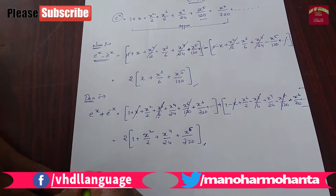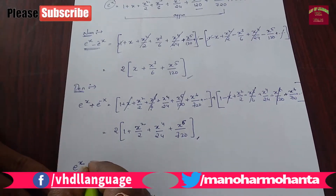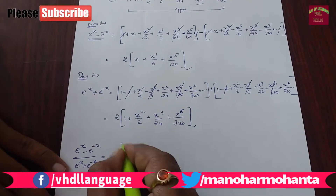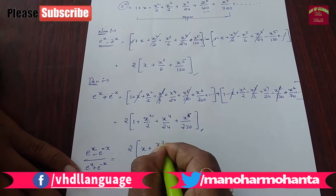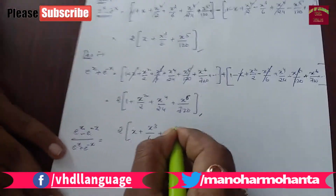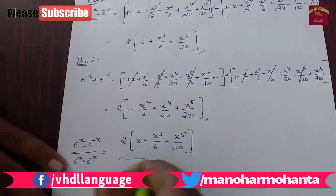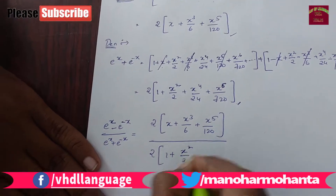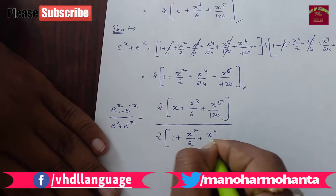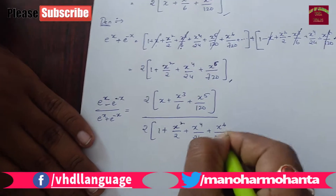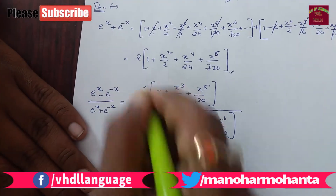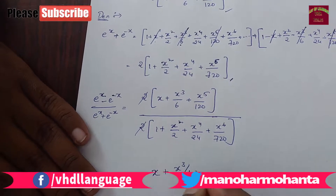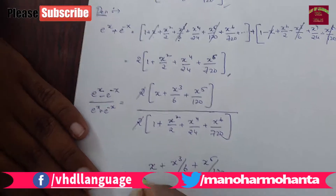Now this is numerator and denominator. If we expand it, e power x minus e power minus x divided by e power x plus e power minus x equals to: numerator 2x plus x power 3 by 6 plus x power 5 by 120, and denominator 1 plus x square by 2 plus x power 4 by 24 plus x power 6 by 720. This 2 will be getting cancelled.